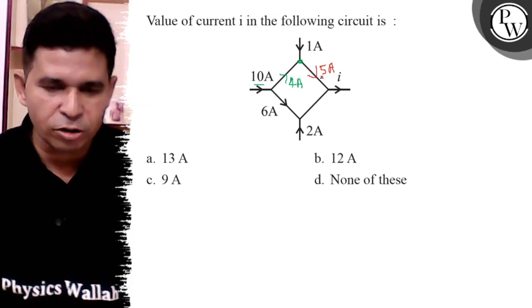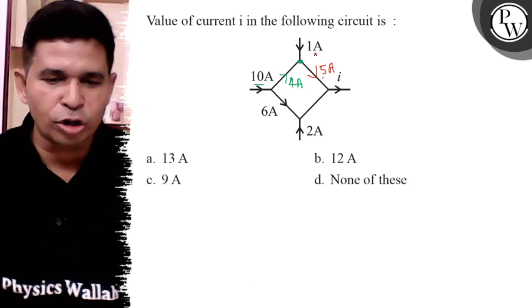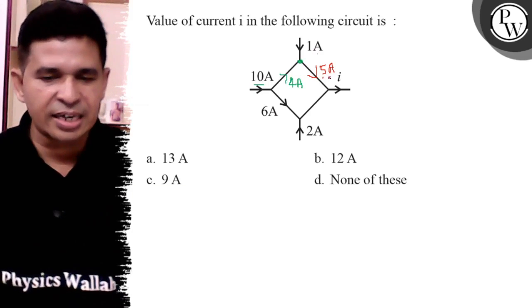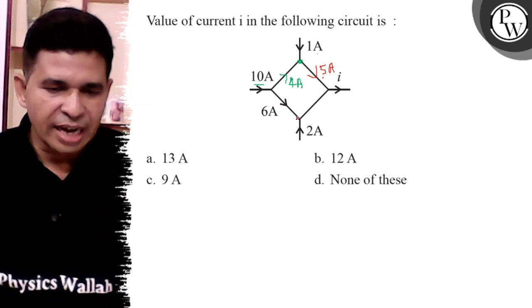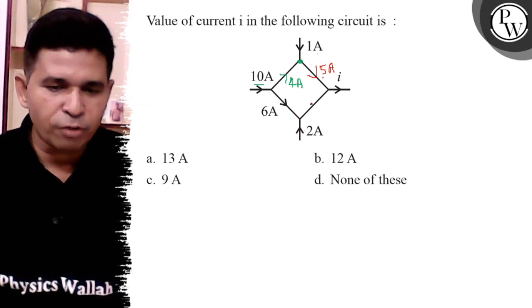Why 5 ampere? Because the outgoing red current equals the black plus green current. And 6 ampere is coming from that side and 2 ampere is coming from that side.